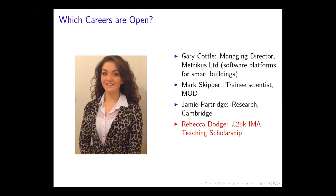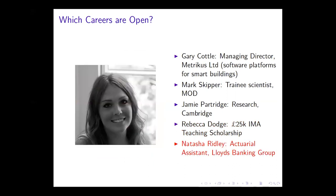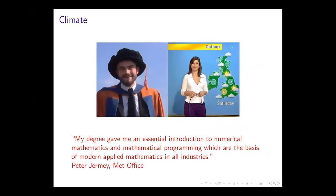Rebecca Dodge obtained a £25,000 scholarship from the Institute of Mathematics and its applications. That was very prestigious. Natasha Ridley is an actuarial assistant with Lloyds Banking Group. Actuaries are people who analyze risk. If you have an insurance company or a pension scheme, you want to know how much you are exposed to risk, and for that you need actuaries.